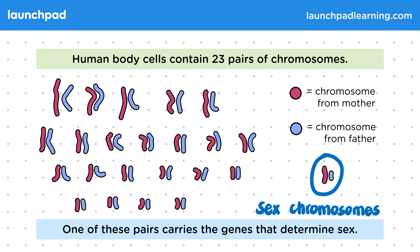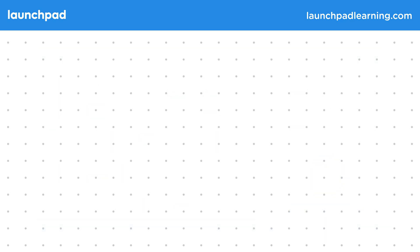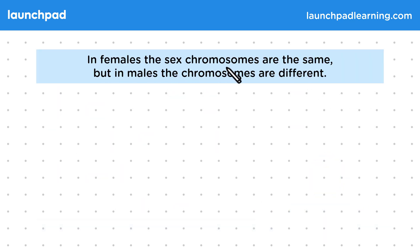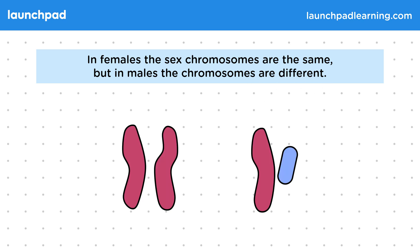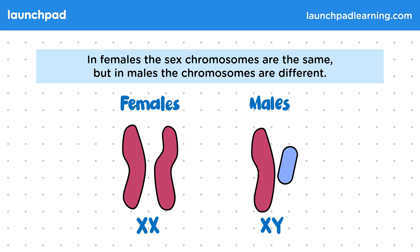How does this 23rd chromosome pair determine sex characteristics? In females, the sex chromosomes are the same, but in males, the chromosomes are different. Female sex chromosomes look like this, usually noted as XX. Males look like this — these are XY chromosomes.